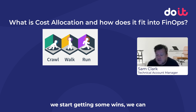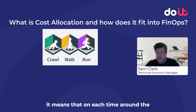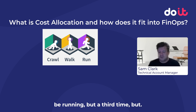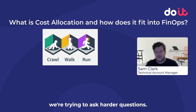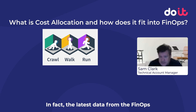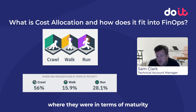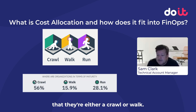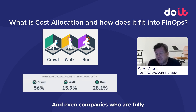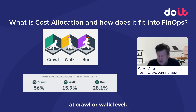Once we see the value and start getting some wins, we can use those to show the rest of the organization how well we're doing and that this really is a good thing with a genuine benefit for the company. In specific terms of cost allocation, each time around the phase we're trying to ask harder questions and get better at defining our costs and attributing them to the right teams. The latest data from the FinOps organization asked survey respondents to rate themselves on maturity in cost allocation, and a whopping 72% said they were either crawl or walk. Even companies fully invested in FinOps who self-certified are mostly still at crawl or walk level.